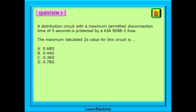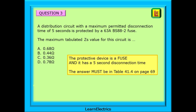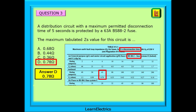Another question on ZS values. A distribution circuit with a maximum permitted disconnection time of 5 seconds is protected by a 63 amp BS 88-2 fuse. The maximum tabulated ZS value for this circuit is what? The protective device is a fuse and it has a 5 second disconnection time — all given in the question. So the answer must be in Table 41.4 on page 69. Find the correct section for BS 88-2 fuses, find 63 amps in the range, and read off the ZS value. Our choice should be answer D — 0.78 ohms.